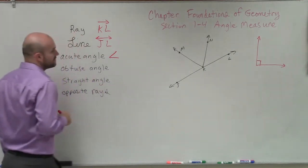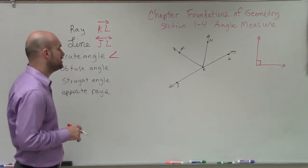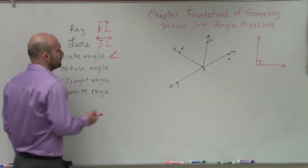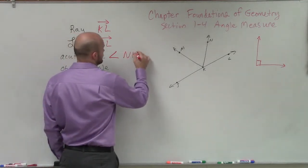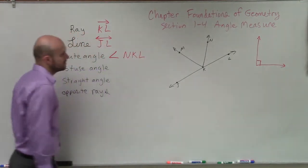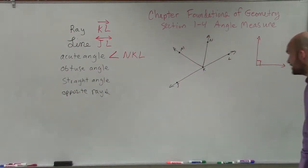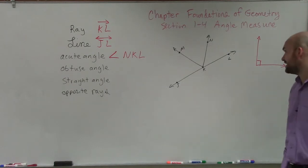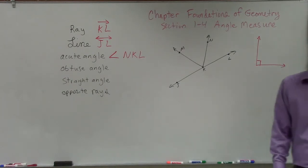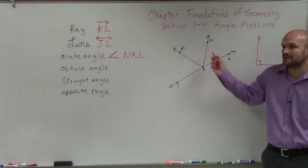And therefore, we have our acute angle would be one acute angle is N, K, L. You also could have done L, K, N. You could do N, K, M. You could do M, K, N. You could do J, K, M, or M, K, J. There's many different acute angles you guys could do. Just make sure you have the angle sign.